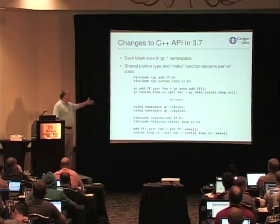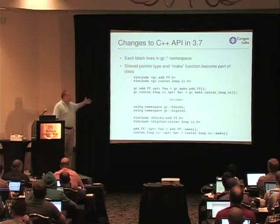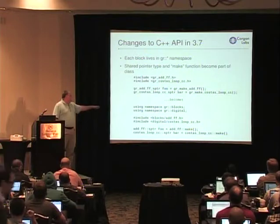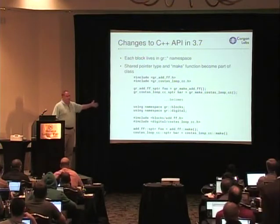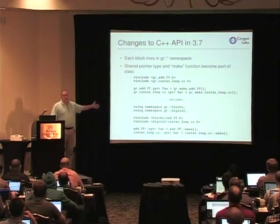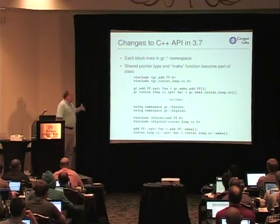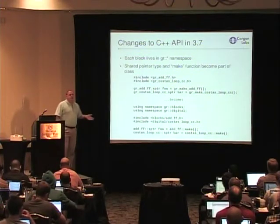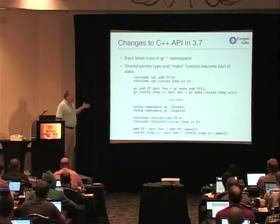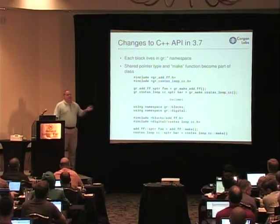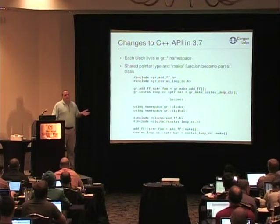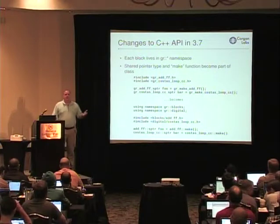Likewise, the Costas loop that's part of GRDigital — and this is the way it is now, so you can go look at it — is just calling the make function that's the static member function of the class for that. For those of you who only use GNU Radio from GRC or from Python, you'll say you made the right choice. But some of you are writing more complicated applications where you can't express some of the logic in GRC.